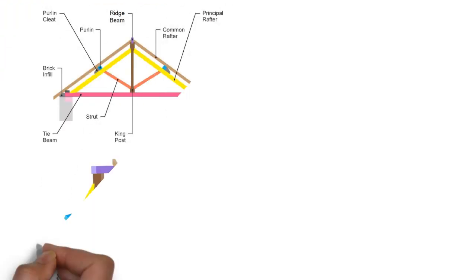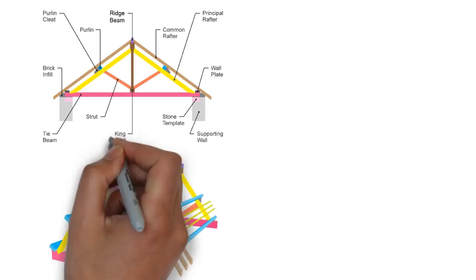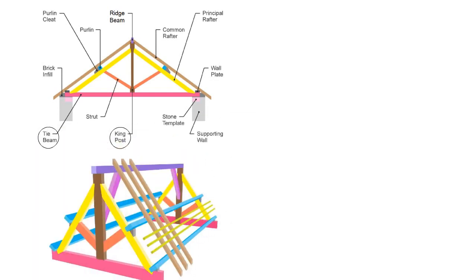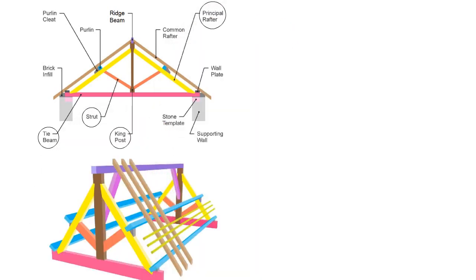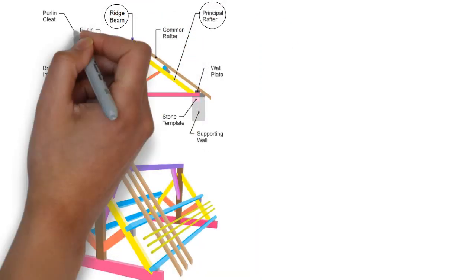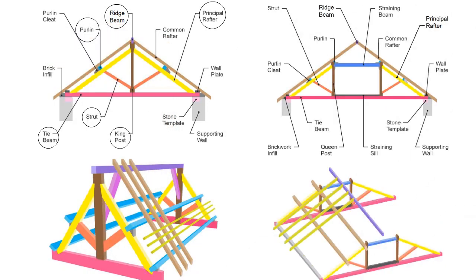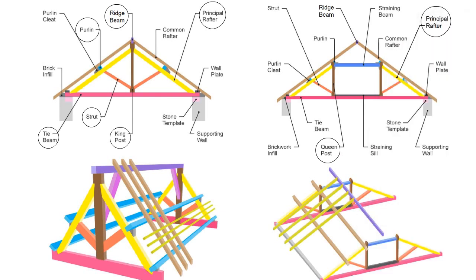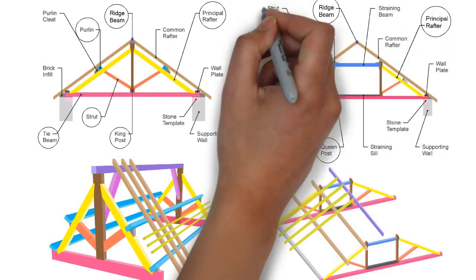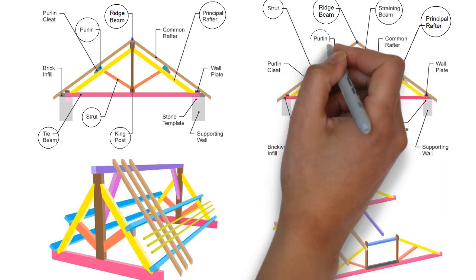Components: As you can see in this picture, the king post truss consists of king post, tie beam, two principal rafters, struts, ridge beam, and purlins. Whereas the queen post truss consists of two queen posts, two principal rafters, ridge beam, struts, tie beam, straining beam, straining sill, and purlins.